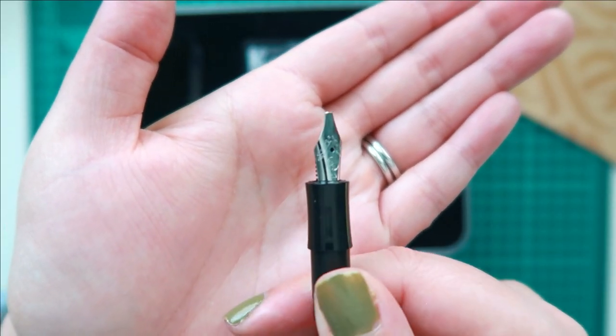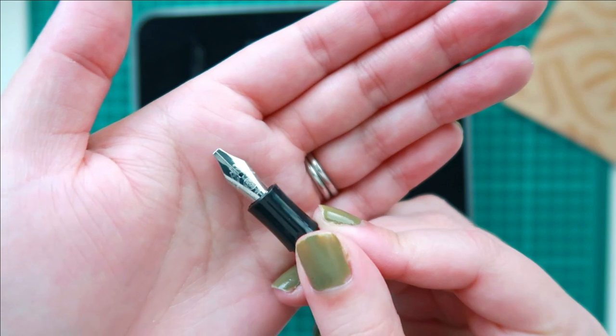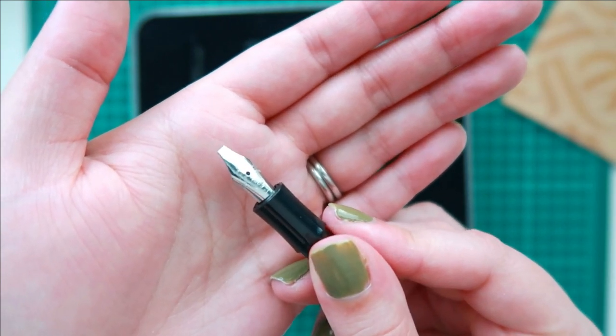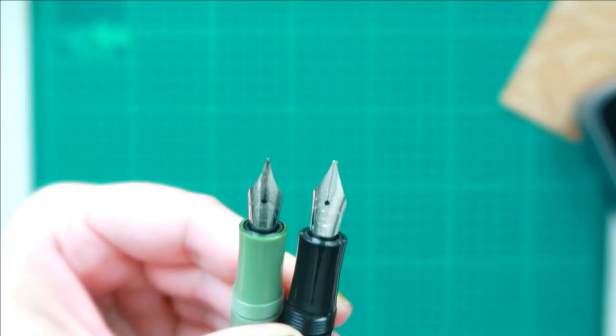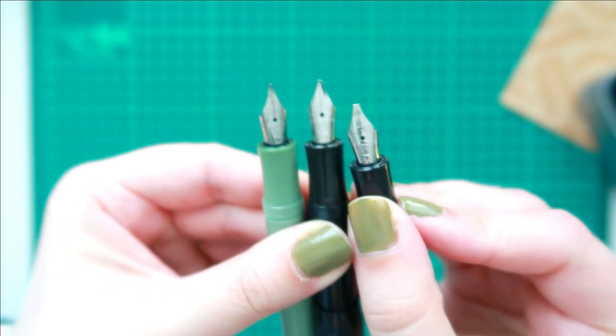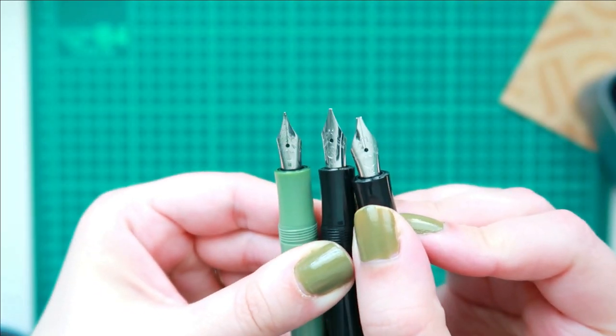Right away you can definitely see the differences between the nibs. This is not the standard nib. Here it is comparing it to my medium size nib in my Sage Kaweco and you can clearly see that flat top.